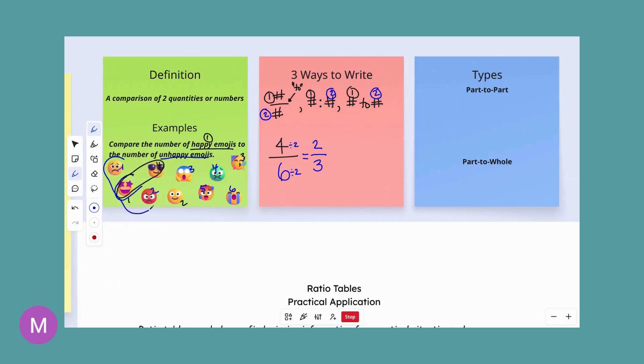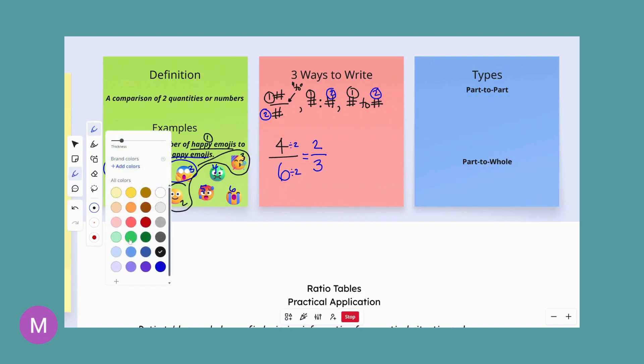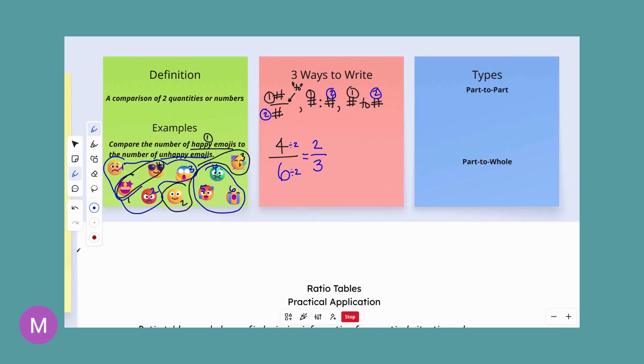So for every two happy emojis, there should be three unhappy ones. Here's one, here's two, here's three. There's one group. And let's see if that works over here as well. For every two happy, that's this guy and this guy, there should be three unhappy emojis. One, two, three. And that is true. So we definitely see that four to six can also be looked at as two to three. And then you could write them all the same way. Two to three or two to three.